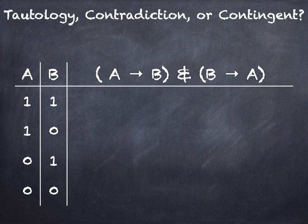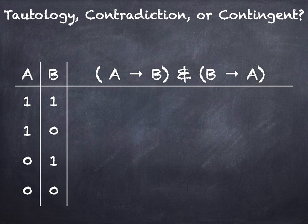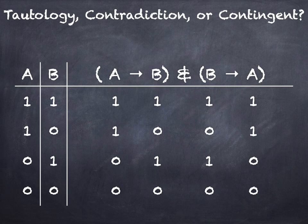Let's look at a third example. Here we've got 'if A then B' and 'if B then A' — you might recognize this as a well... spoilers. Pause the video and try to work it out. Okay, let's see how you did. Copying over our atomic sentences.